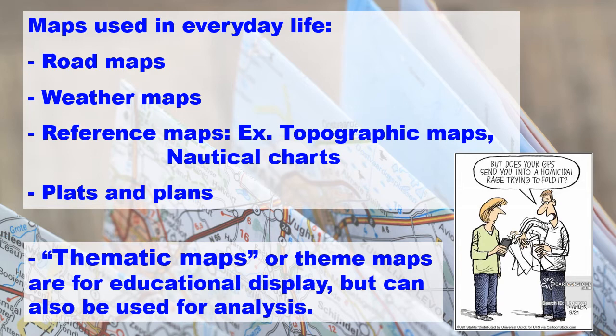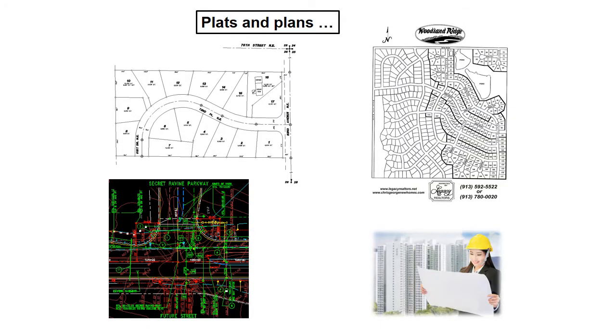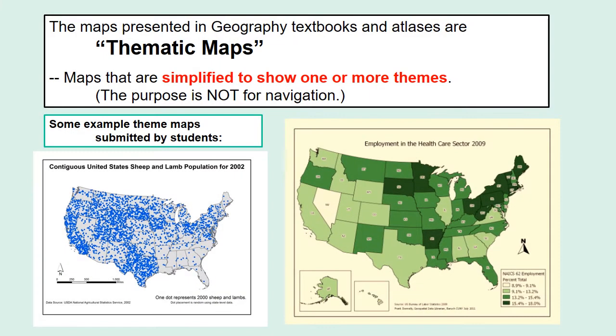What's a thematic map, though? The thematic maps or theme maps are maps that are simplified to show one or more themes. These are the ones that you have in the textbooks and the atlases and some of the wall charts are also thematic maps as well. We'll take a look at these in depth in a bit. Yeah, here's some examples of plats and plans of, say, a new suburban subdivision or utilities. They use a number of plans as well. They need to know where the underground wires are. So these people that use these types of maps in their everyday lives probably don't refer to them as maps. They don't know that they're doing geography.